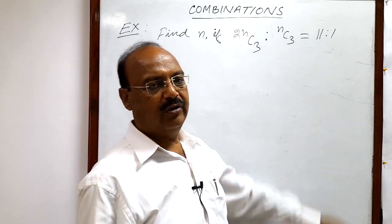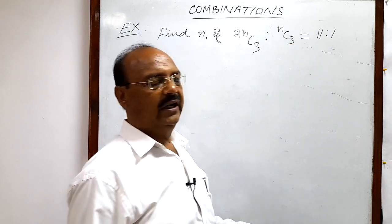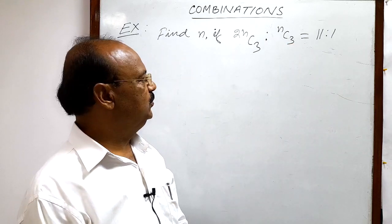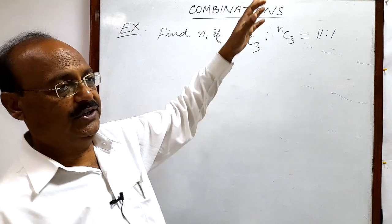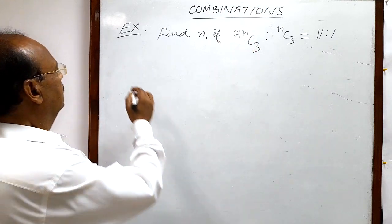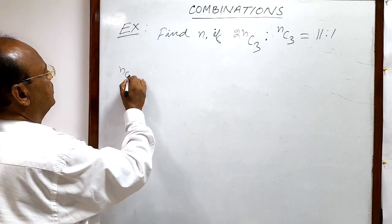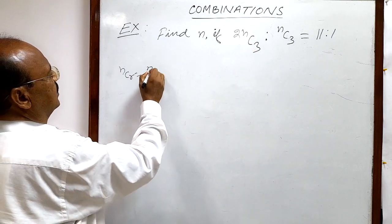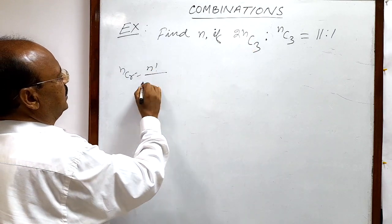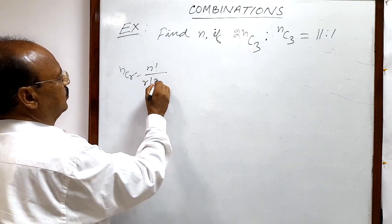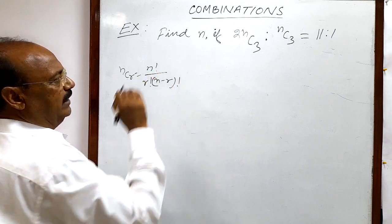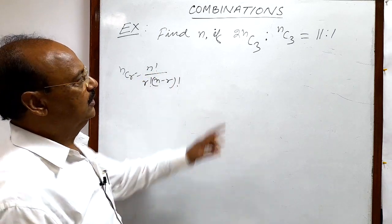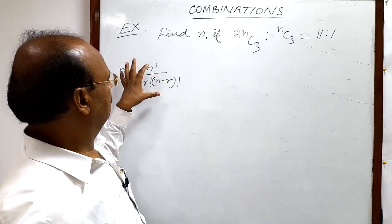Here we will use the formula that is a very basic formula which we use all the time in the chapter of combinations, which is nCr is equal to n factorial by r factorial into n minus r whole factorial.